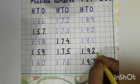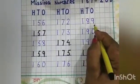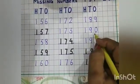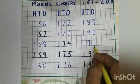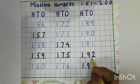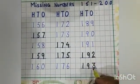Let's read the sequence now. 189. 190. 191. 192. 193.